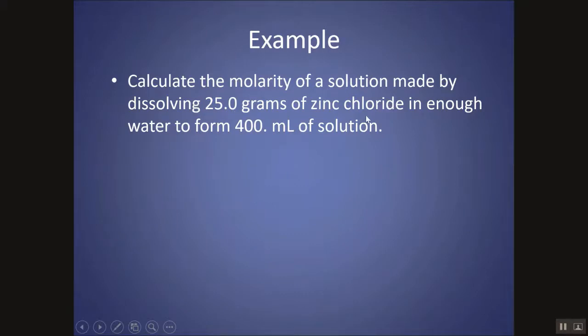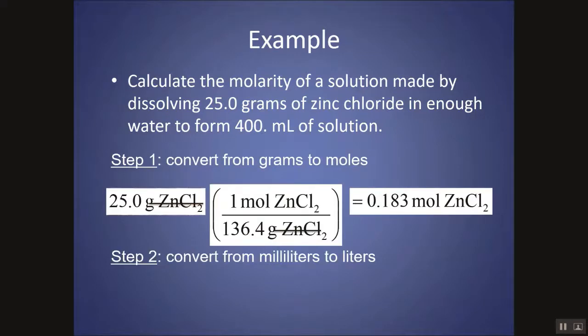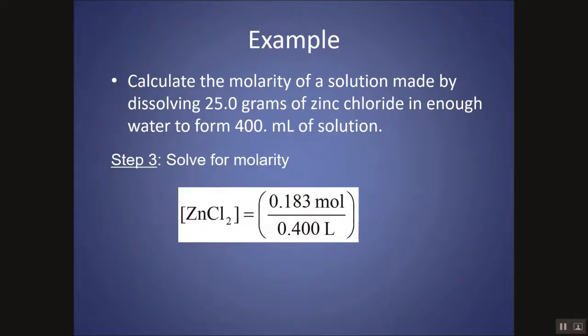So if you have grams of something, make sure you mole it out. 25 grams of zinc chloride enough to form 400 milliliters of solution. Okay, so all I'm doing is I'm moleing out my solute. I have milliliters. Turn that into liters by dividing by a thousand or moving the decimal place over three places. And then I can divide these things to find the concentration of ZnCl2 in molarity.